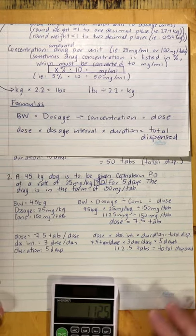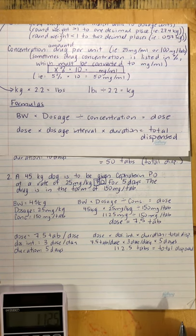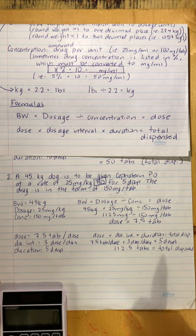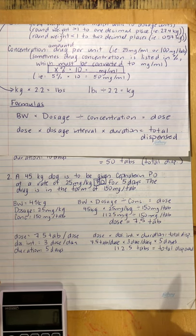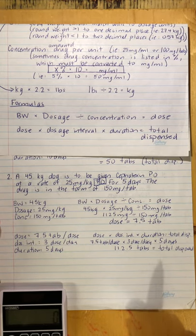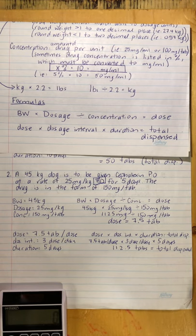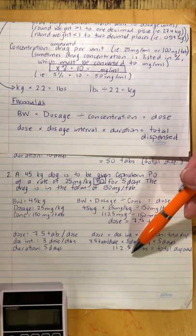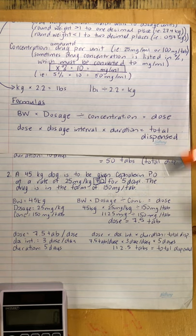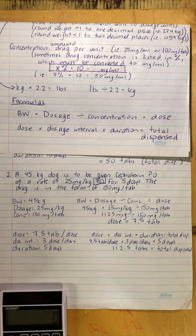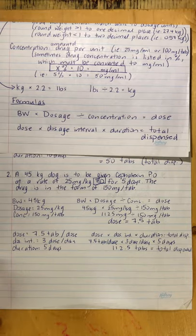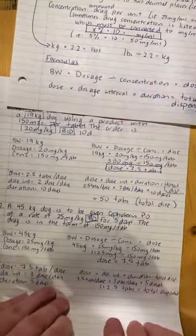Can we really dispense 112.5 pills? Sometimes you might leave a half tablet in a bottle, but it's better to dispense the full 113. You'll never round down — if you round down, the owner will be short by a half tab on the last dose. So we round up to 113, and they'll just have one half tab left over.